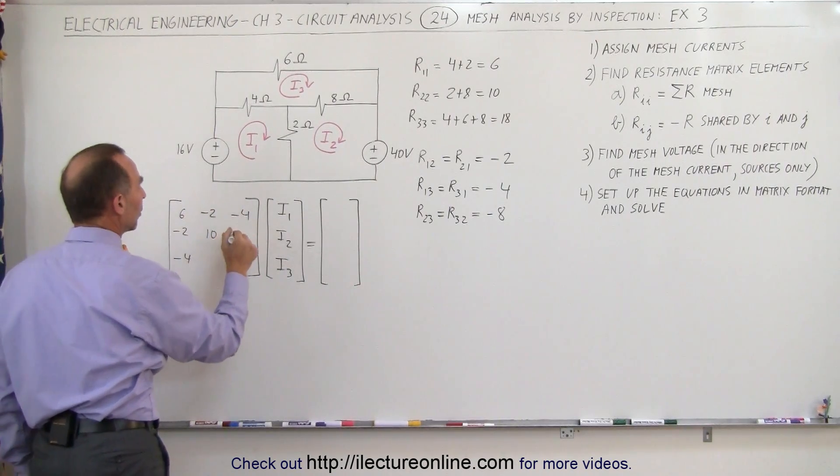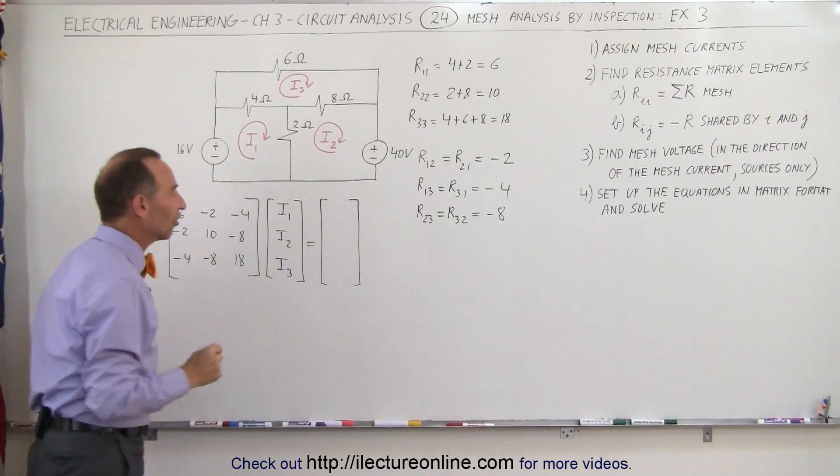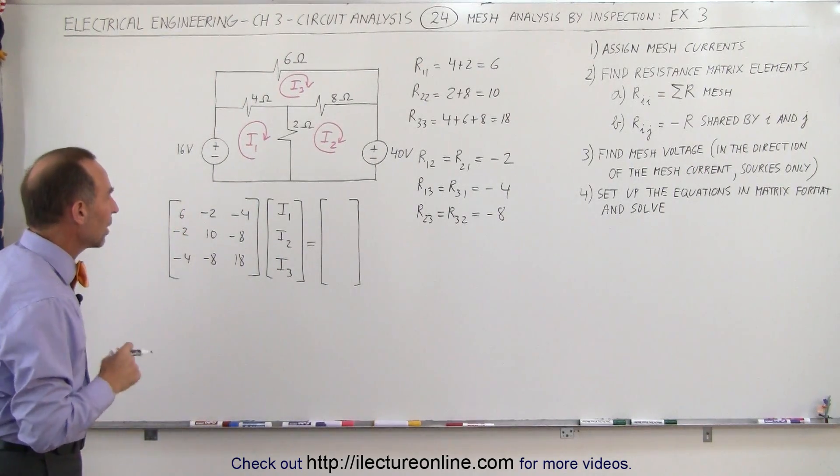And then for these two elements, we put in a minus 8 and a minus 8. This gives us our resistance matrix of all the meshes.